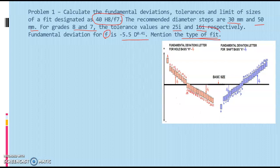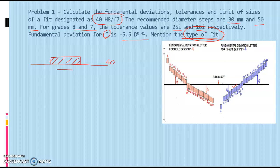To determine the type of fit, we use a graphical representation. The zero line represents the basic size. H8 is a capital H hole — the basic hole — which rests just above the zero line, so its fundamental deviation is zero. F is placed below the zero line, representing the shaft. Since the shaft is below the hole, the size of the shaft is less than the size of the hole, making this a clearance fit.